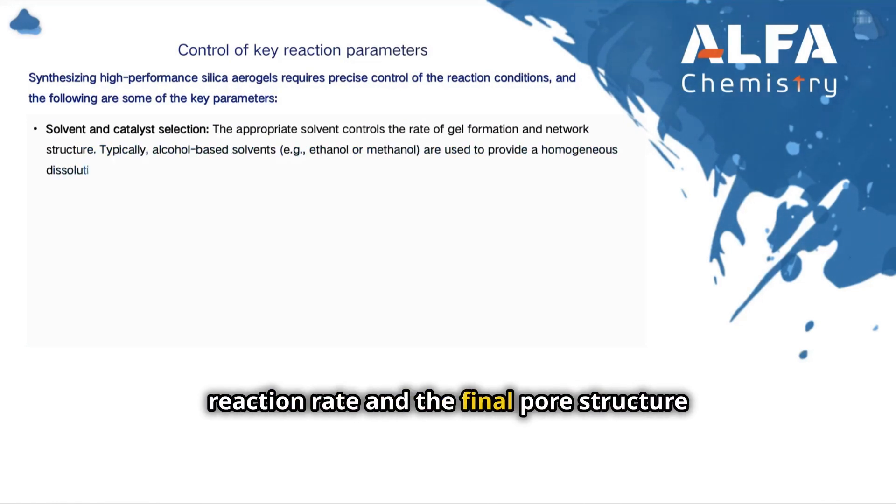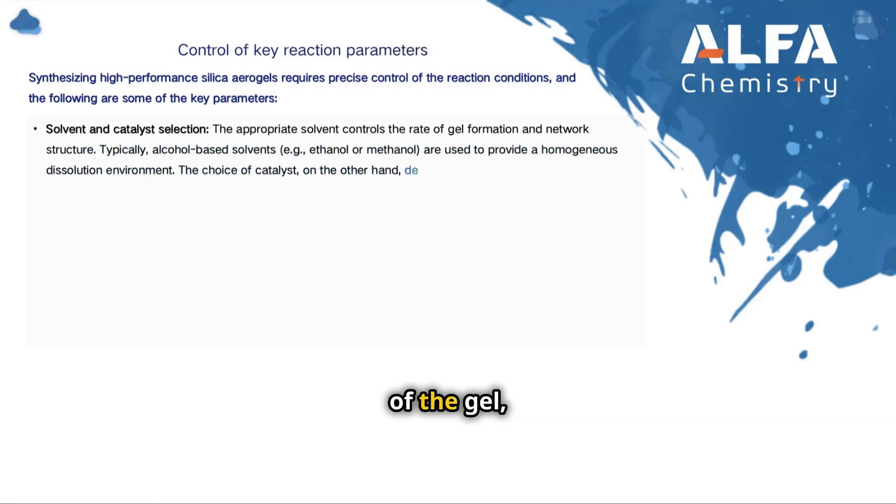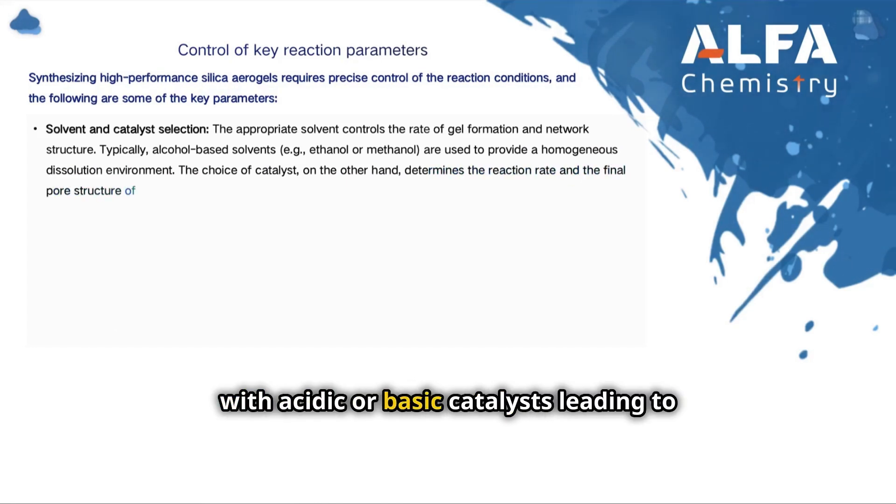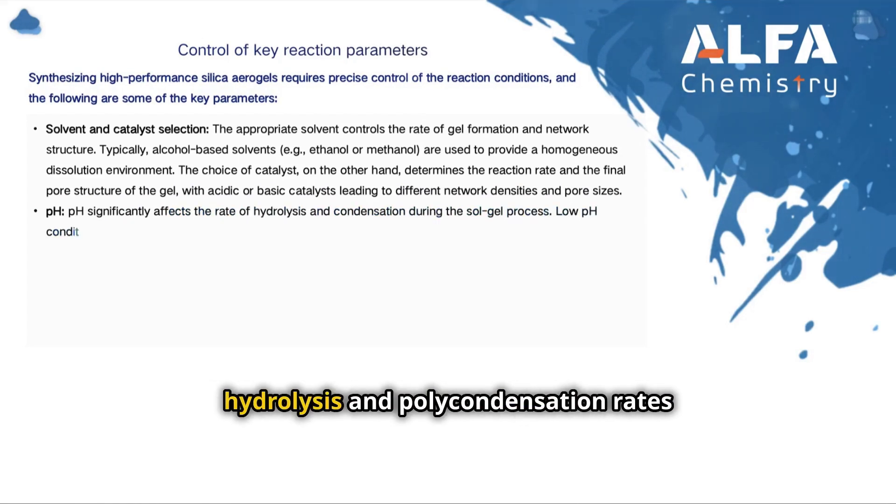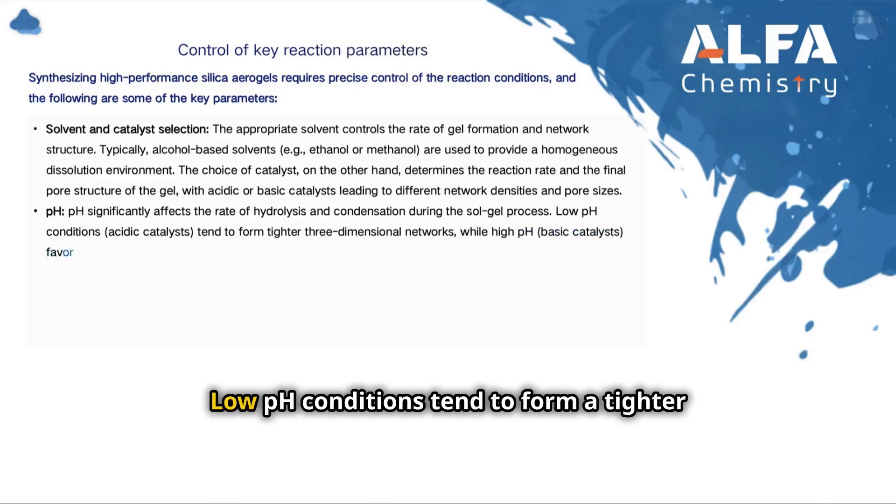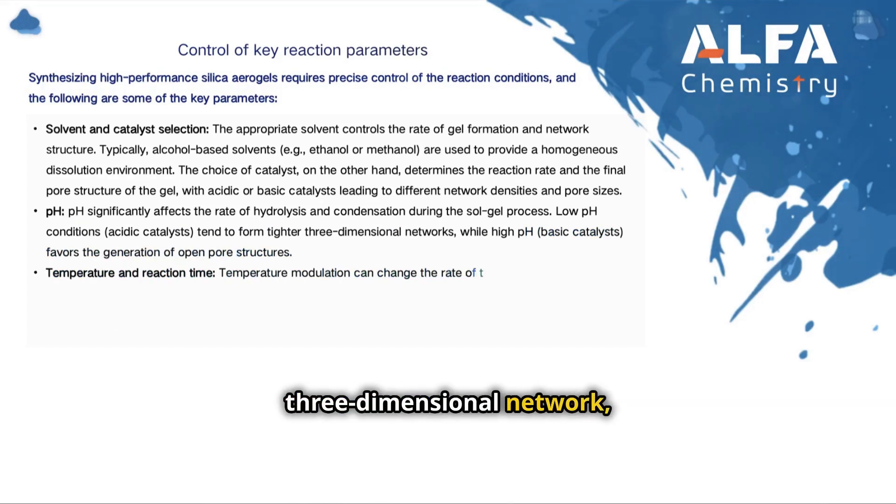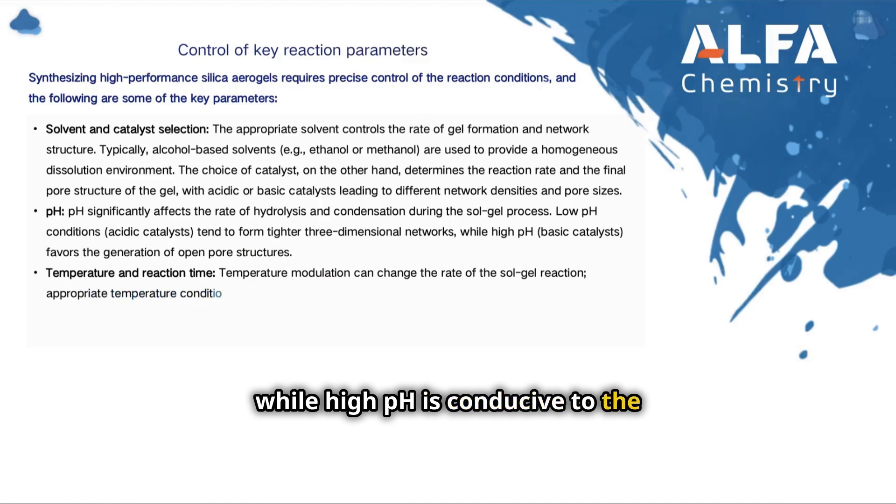The choice of catalyst determines the reaction rate and the final pore structure of the gel, with acidic or basic catalysts leading to different network densities and pore sizes. The pH value significantly affects the hydrolysis and polycondensation rates during the sol-gel process. Low pH conditions tend to form a tighter three-dimensional network, while high pH is conducive to the generation of open pore structures.